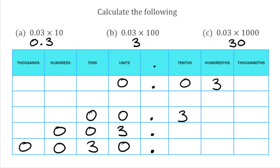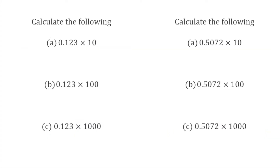Hopefully this makes sense of how we can move our digits around the decimal point when we're multiplying by 10, 100, and 1,000. I've got a few more questions for us to have a look at. Feel free to pause the video here and have a go at these, and we'll go through the solutions in just a few seconds.